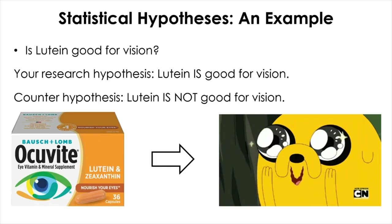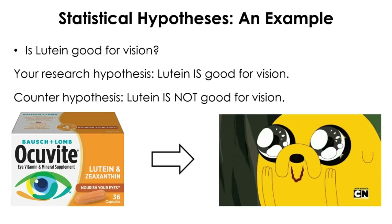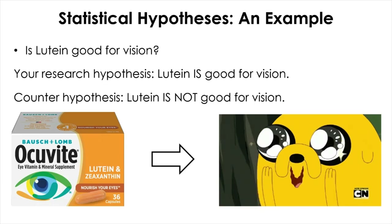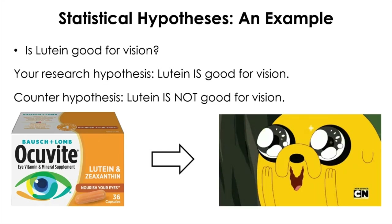The null and research hypothesis are mutually exclusive in that they both cannot be true at the same time. They are also mutually exhaustive because together they cover all the possibilities — lutein will be either good or not good — so this covers all the possibilities.